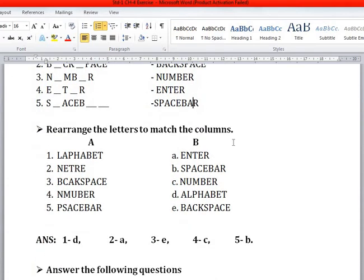Matching. Jumble words are here. You have to arrange it and then after match it. First is yes, Alphabet. Second, Enter. Third, Backspace. Number 4, Number. Number 5, Spacebar.